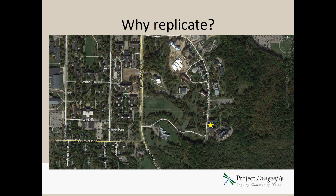So, why replicate? Say you're interested in tree diversity. In this case, the yellow star is Peabody Hall, the offices of Dragonfly at Miami University. You can see down in the lower right of the slide there's a forest remnant, and then there's the main campus area to the left with more manicured lawns with trees interspersed. Say you're interested in how many tree species there are in each of those locations — the forest versus the campus — and that's your comparative question: which has more tree species? You decide to sample trees in a fixed plot with a certain radius, because you can't count and identify all of them — that would take too long. So that's plot A in the forest, and you do the same on campus for plot B.